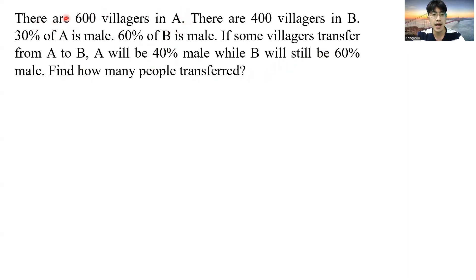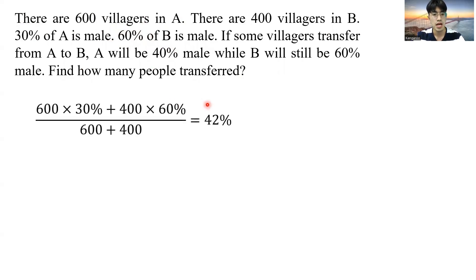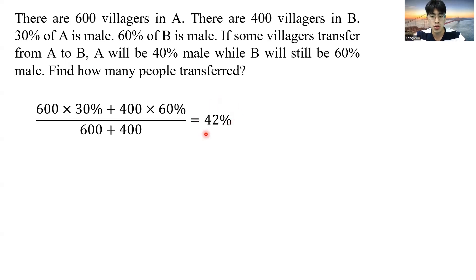We can take town A as solution A with 30% concentration, and town B as solution B with 60% concentration. So at the beginning, if we mix up these two solutions, we get 42% concentration. But if we shift some amount of people from town A to town B, the total concentration should not change.